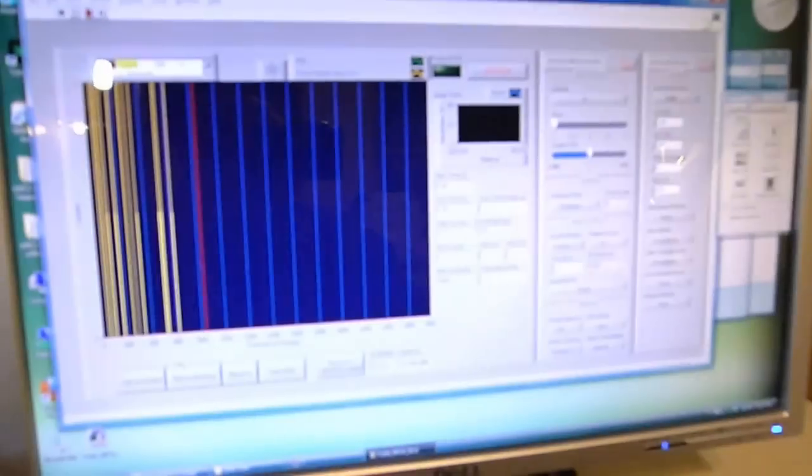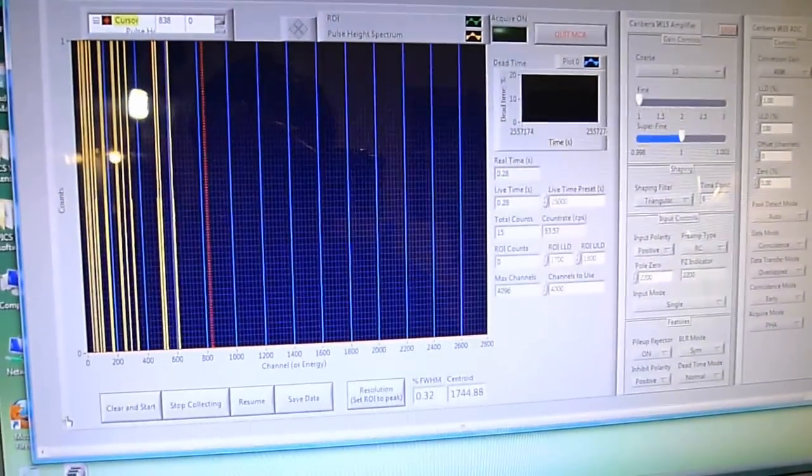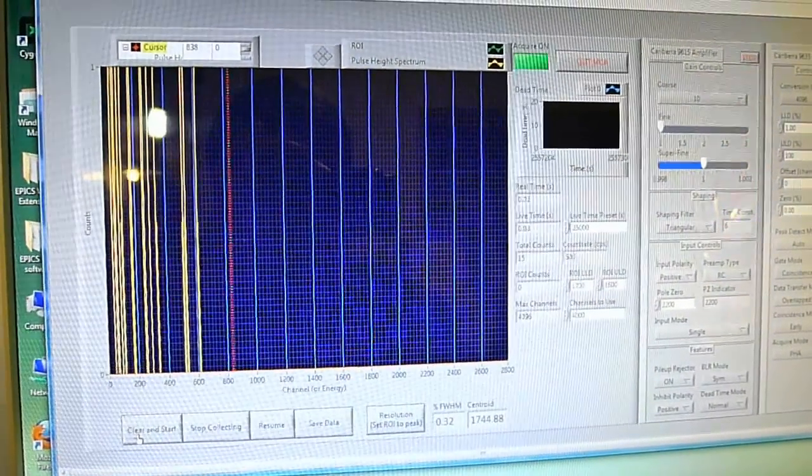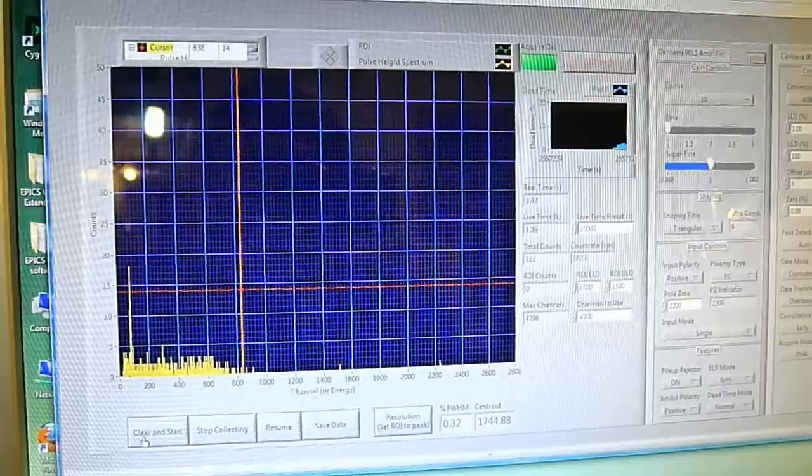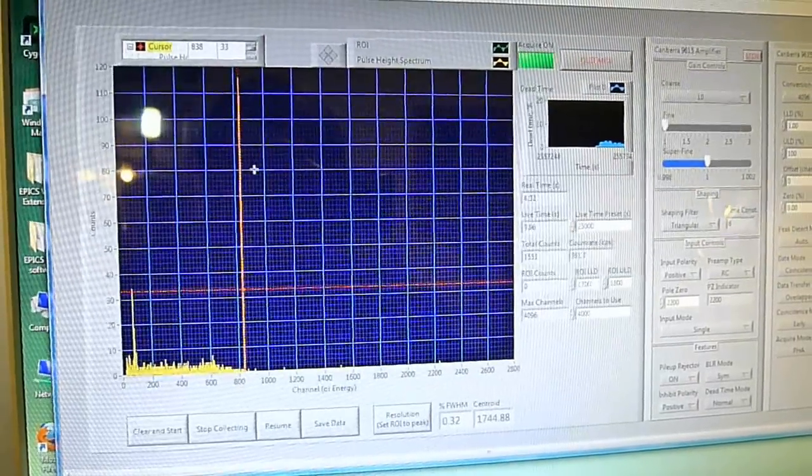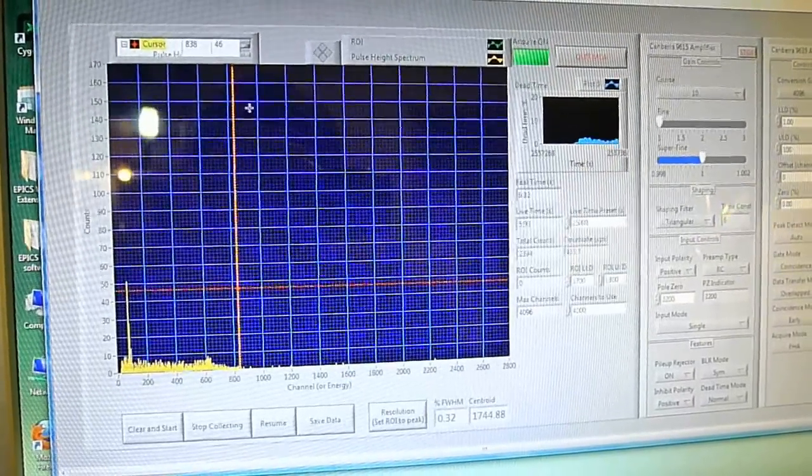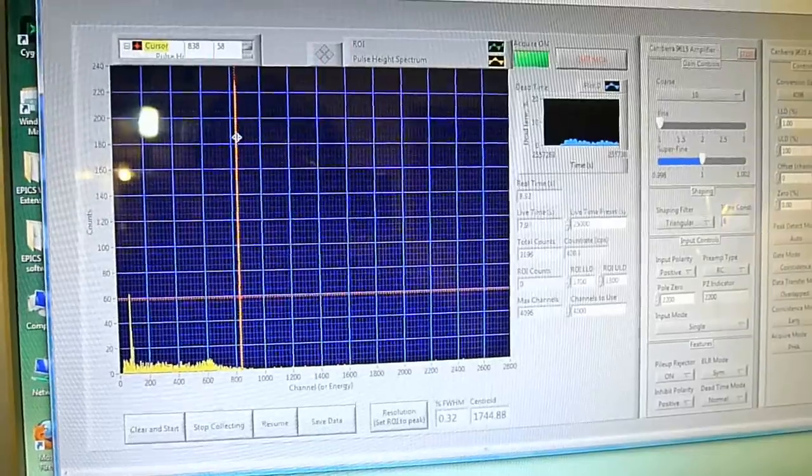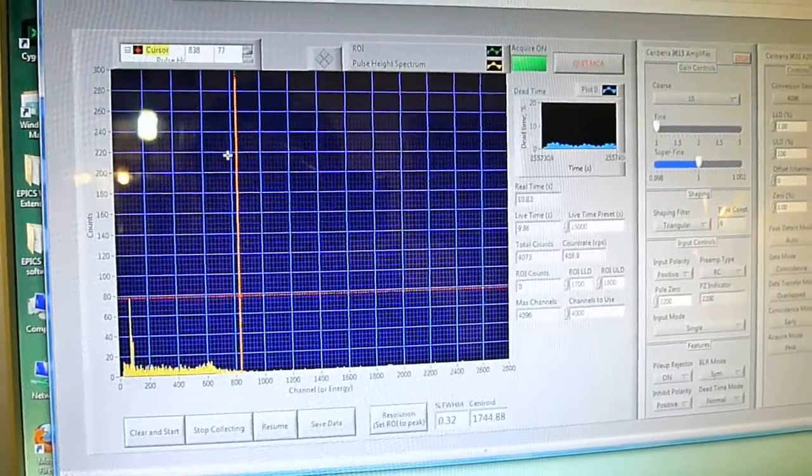Let's look at the computer here. This is pulse height spectrum. I'm going to hit the clear and start button, and we're going to begin acquiring a spectrum. Immediately we note one very large peak, and it's the peak that's right where the cursor is right now.